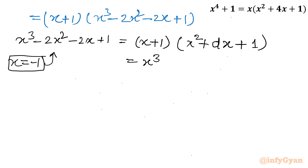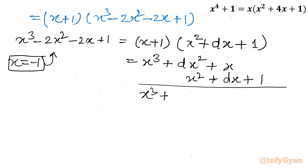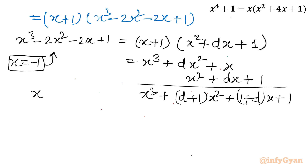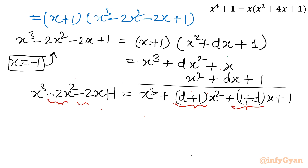Expanding (x + 1)(x² + dx + 1) gives x³ + (d+1)x² + (1+d)x + 1. Comparing with x³ - 2x² - 2x + 1, the coefficient of x² gives d + 1 = -2, so d = -3. Both the x² and x coefficients confirm d = -3.